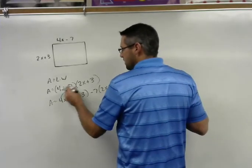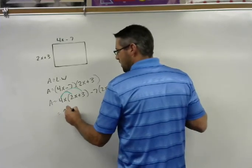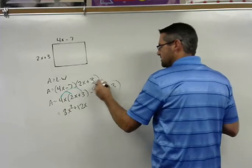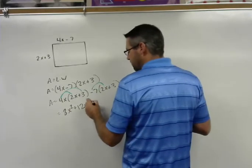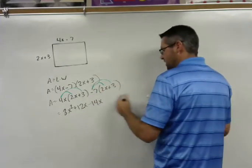So 4x times 2x and 4x times 3, so 4x times 2x is 8x squared, 4x times 3 is 12x, and then the negative 7 times the 2x is negative 14x, and the negative 7 times the 3 is negative 21.